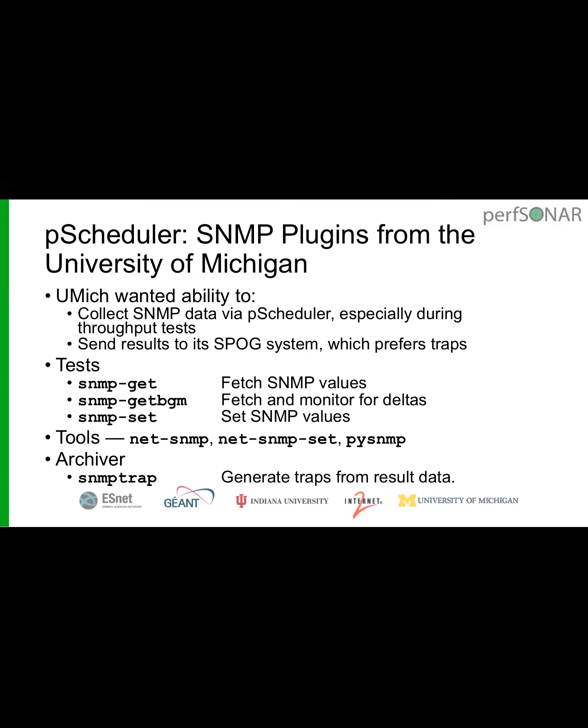Michigan has added three new test types: SNMP Get (fetch a group of SNMP values), SNMP Get BGP (runs multiple tests in the background and monitors for deltas), and SNMP Set (a reach-out-and-touch-something test, allowing things like resetting power on equipment using PScheduler as the mechanism). Supporting tools include plugins based on net-SNMP, a Python package called PySNMP, and the SNMP trap archiver. These are being polished and should be out with the beta in a few weeks.